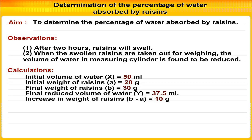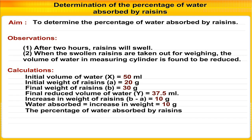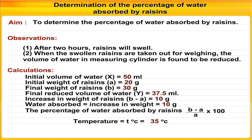Increase in weight of raisins B minus A is 10 g. Water absorbed is equal to the increase in weight, i.e., 10 g. The percentage of water absorbed by raisins is (B-A)/A × 100. Temperature T is equal to 35 degrees Celsius, which is equal to 273 + 35 = 308 Kelvin.